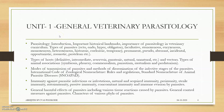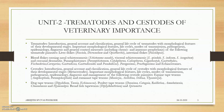Unit 1 is General Veterinary Parasitology. We will be dealing with the important historical landmarks, important history and scientist knowledge, types of parasites and types of host, mode of transmission, method of dissemination of infective stages, different types of infective stages, immunity against parasitic infestation, nomenclature of parasites and parasitic infections and infestations, and we will be classifying the main phylum of the parasites.